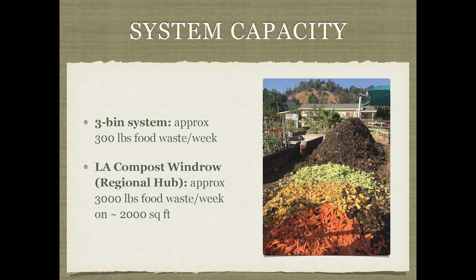We've done a lot of composting with three-bin systems and windrow systems. Our older three-bin systems were smaller and new ones are larger, which changes the volume and processing capacity. Our older three-bin system processes approximately 300 pounds of food waste a week. For the windrows at Debs, they're really packing in a lot — processing about 3,000 pounds of food waste a week, and at one point they processed around 6,000 pounds.